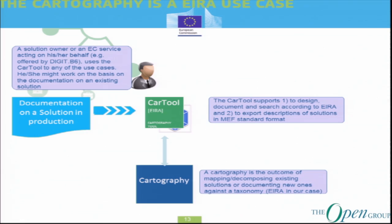One key use case of EIDA is the cartography. In European Union terms, a cartography is a mapping of a structure — which is EIDA. Imagine an Excel spreadsheet where the columns represent each architectural building block of EIDA, and the rows are the different solutions you have in production. The effort of mapping each production solution against each architectural building block is a cartography — or in classical literature, an inventory of solutions in production.